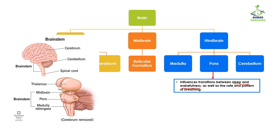The pons influences the transition between sleep and wakefulness, as well as the rate and pattern of breathing. The transition from sleep to wakefulness — waking up suddenly — is controlled by the pons. Similarly, when you fall asleep while reading or using your phone, that transition is also controlled by the pons. When you are in fear or anger, the increased breathing rate is also regulated by the pons.